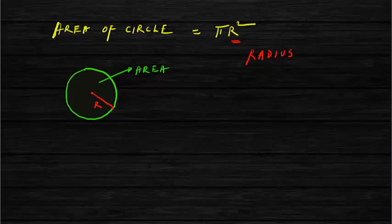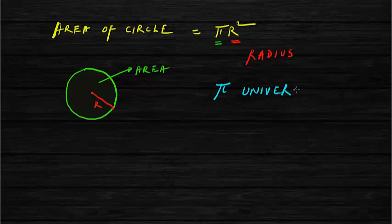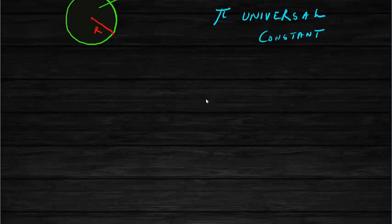Now that we know what the radius of the circle is, let us go back to πr² and look at the second part of the formula: pi. What is pi? Pi is a universal constant and a very important number in geometry. What is so universal about pi? Let us look into it.